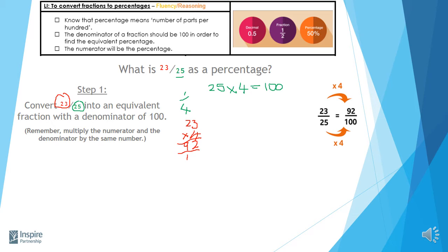So here you can see my 25 multiplied by 4 gave me my 100 and then my 23 multiplied by 4 gave me 92. So to convert my fraction 23 over 25 into a fraction that was over 100, I need to multiply the denominator and the numerator by 4.